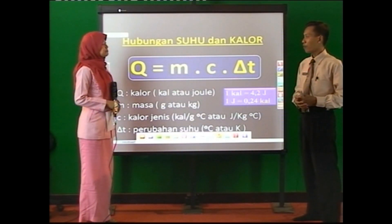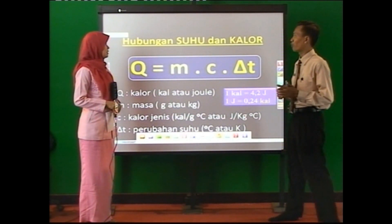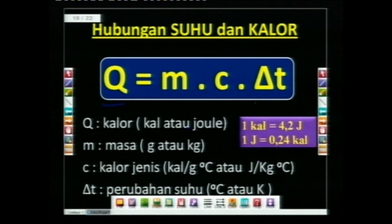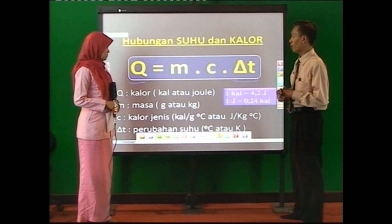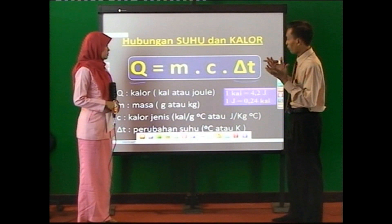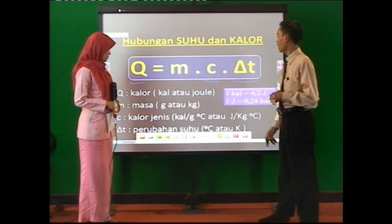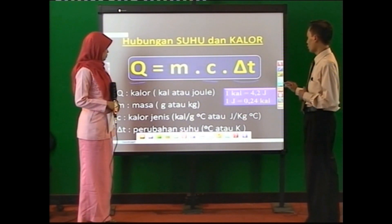Jadi bagaimana hubungan antara suhu dan kalor? Kalor disimbolkan dengan Q. Hubungannya bahwa Q atau kalor sama dengan masa (M) dikalikan C kecil, yaitu kalor jenis, dikalikan dengan delta T. Delta T adalah perubahan suhu.